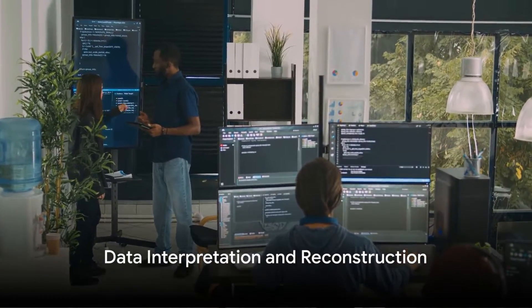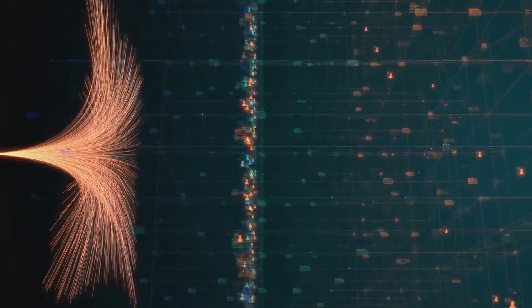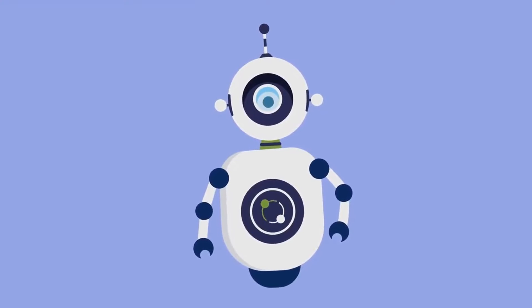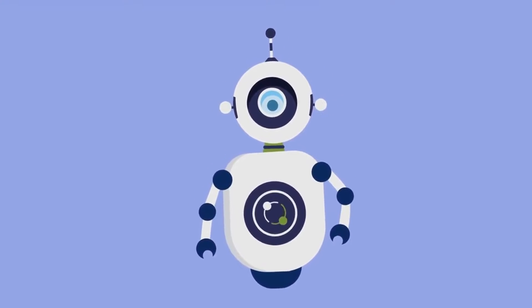Now imagine feeding data into this machine. The visible layer accepts the data and the hidden layer interprets it, finding patterns within the noise. The machine then uses this knowledge to reconstruct the data using a process known as reconstruction error. It's a bit like having a conversation where the machine is trying to guess what you're thinking based on what you've already said.